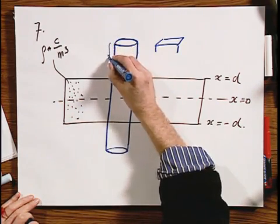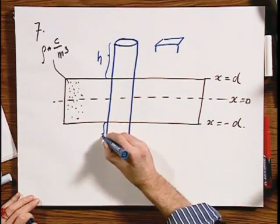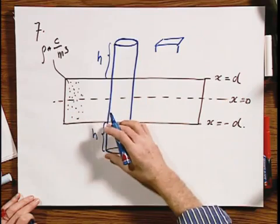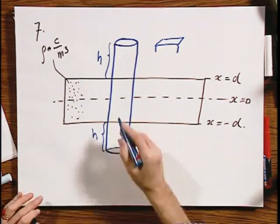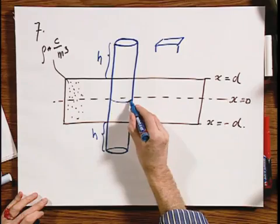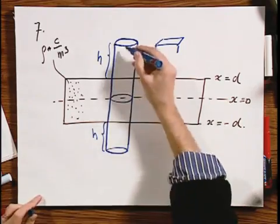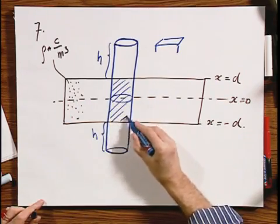It is crucial, essential, and an absolute must that this distance here above the slab must be the same as the distance below the slab, and you will see shortly why that is. The charge inside this cylinder is the charge which is only here.